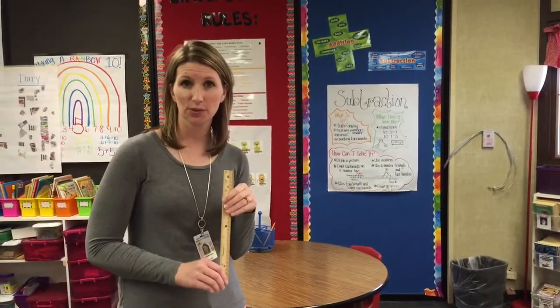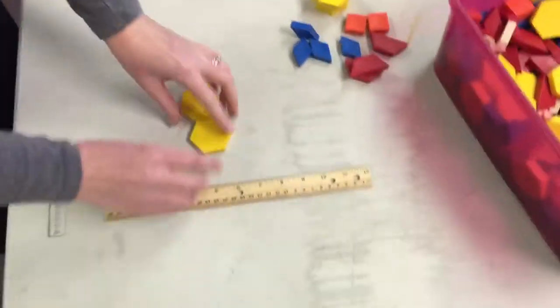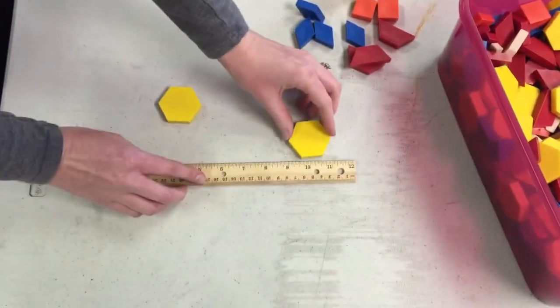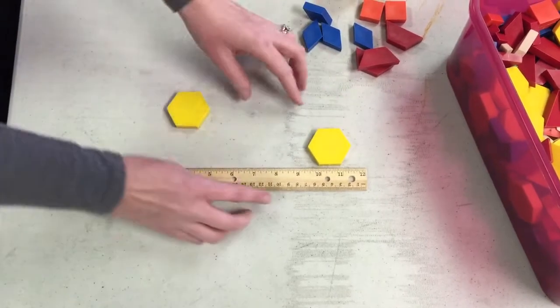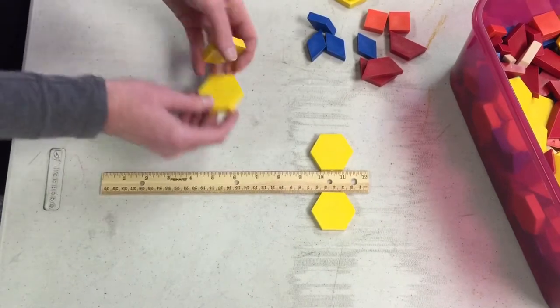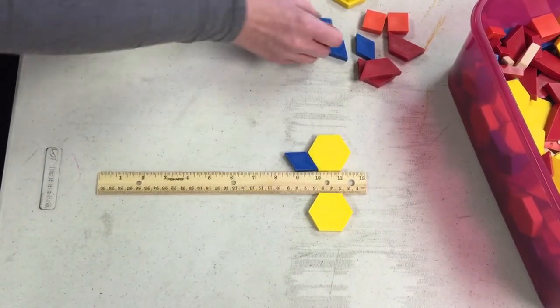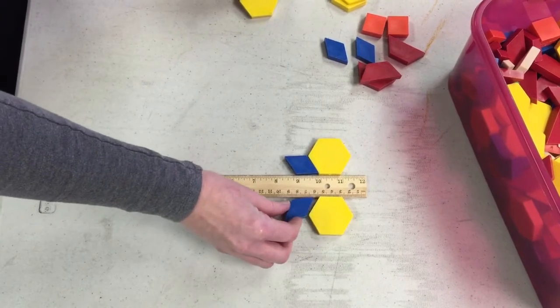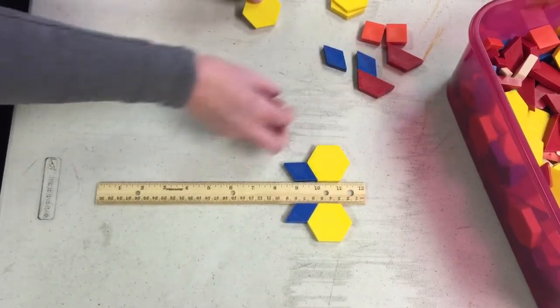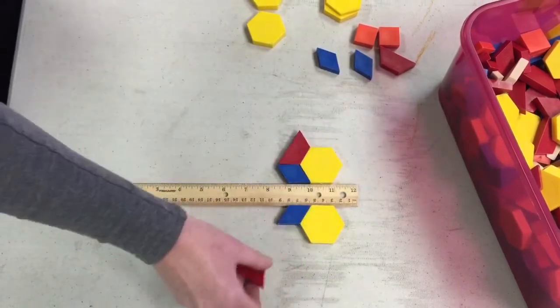Okay, so now I'm gonna use this ruler as my line of symmetry and I'm going to build a little design here and I'm gonna use this as my line. So anything that I put on one line of my symmetry, I have to put on the other. So I'm just gonna do a little pattern here. I put a diamond here, so I'm gonna have to put a blue diamond here. And then I'm gonna put a trapezoid here, so I have to put a trapezoid here.